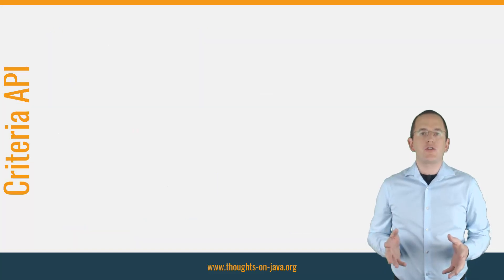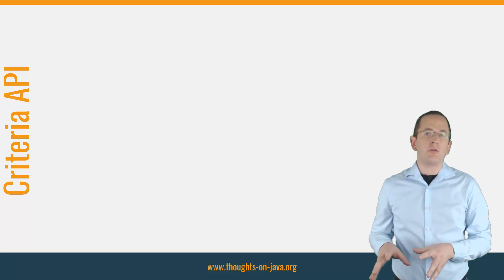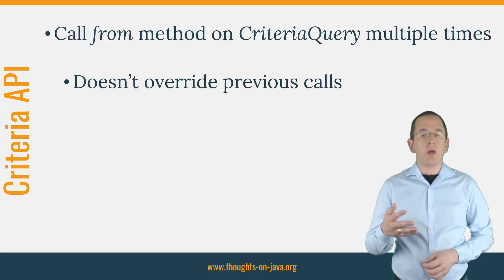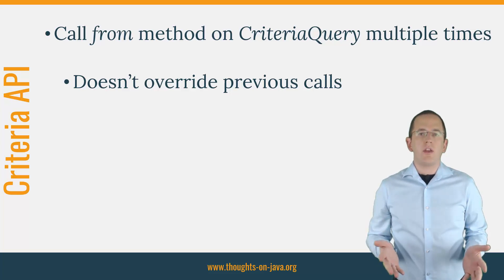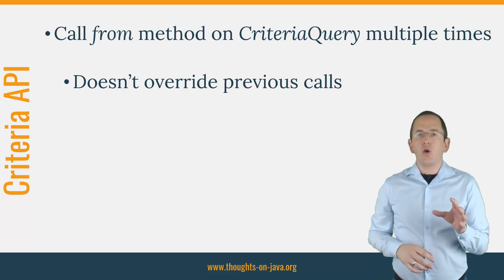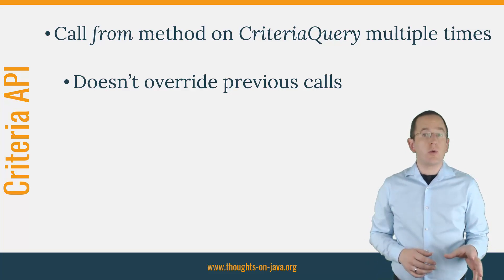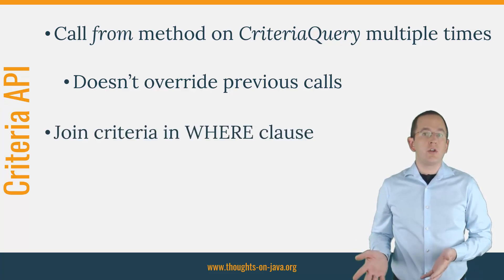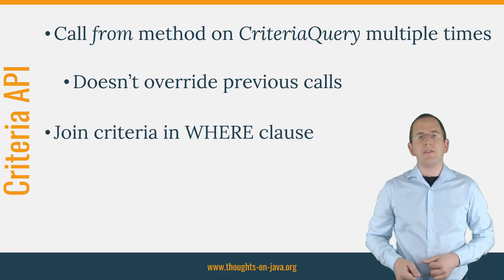Creating a cross-join in a Criteria Query is simple but a little counterintuitive. You need to call the FROM method on your Criteria Query for each entity you want to include in the cross-join. In contrast to all other methods on the Criteria Query, calling the FROM method multiple times doesn't overwrite the previous calls. After you've done that, you need to include your join criteria in the WHERE clause.